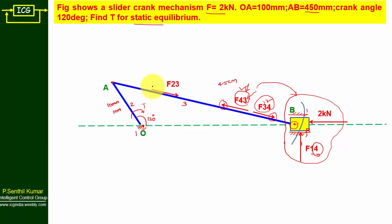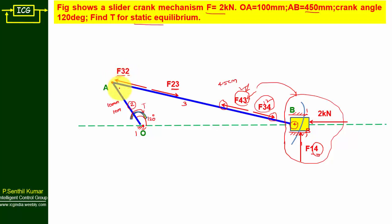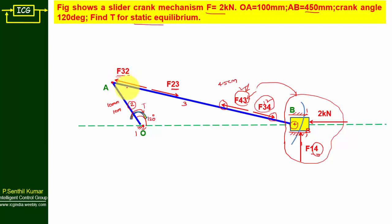At the other end of the connecting rod you have two forces: F23, which represents the force offered by crank 2 on connecting rod 3, and F32, which represents the force offered by connecting rod 3 on crank 2. This is how you draw the free body diagram for the connecting rod.